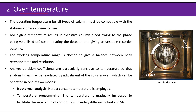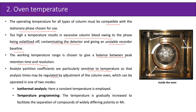Regarding oven temperature, the operating temperature for all types of columns must be compatible with the stationary phase chosen. Too high a temperature results in excessive column bleed, owing to the phase being volatilized off, contaminating the detector and giving an unstable recorder baseline. The working temperature range is chosen to give a balance between peak retention time and resolution. Analyte partition coefficients are particularly sensitive to temperature, so analysis times may be regulated by adjustment of the column oven, which can be operated in one of two modes. The first is isothermal analysis, where a constant temperature is employed.